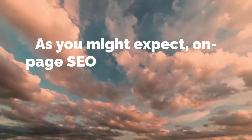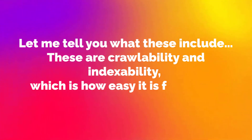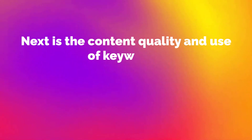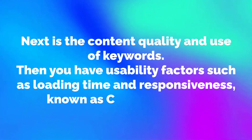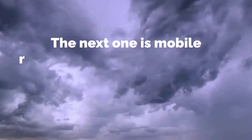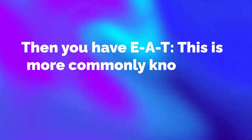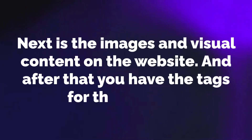On-page SEO elements are the parts that are on your website. These include crawlability and indexability, which is how easy it is for search engines to find and map your content. Next is content quality and use of keywords. Then you have usability factors such as loading time and responsiveness, known as core web vitals. After that is mobile responsiveness — how well optimized your website is for mobile and tablet devices. Then you have E-A-T, more commonly known as expertise, authority, and trustworthiness. Next are images and visual content, and finally the tags for the website.